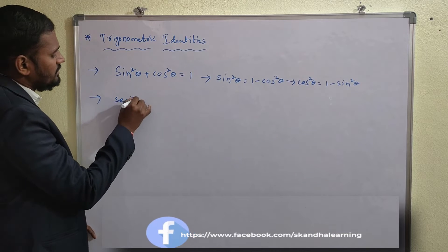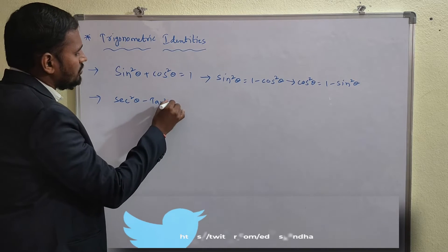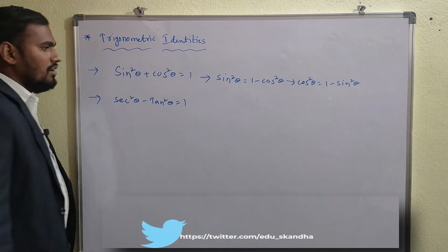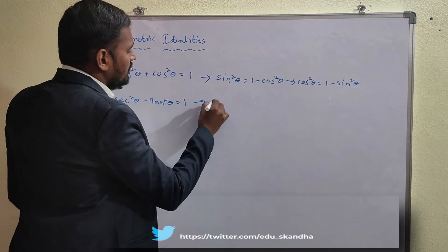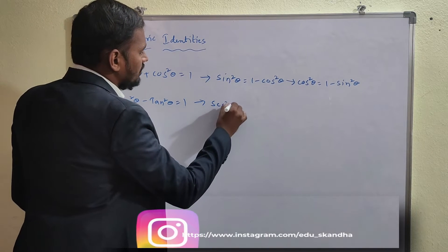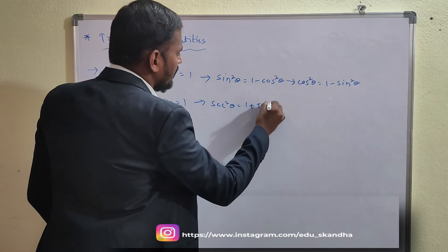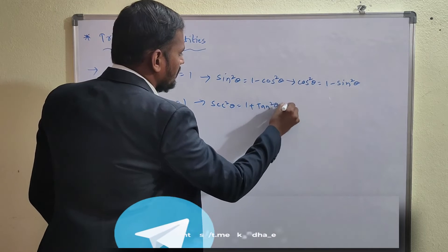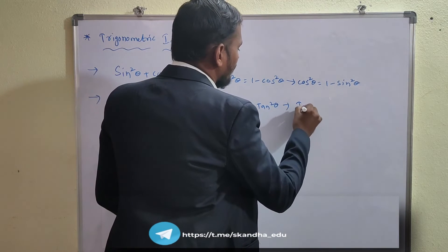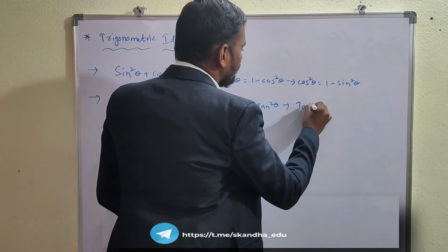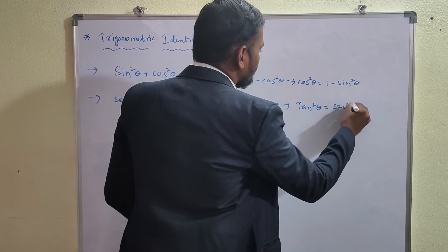The second identity is: sec²θ - tan²θ = 1. From this you can write sec²θ = 1 + tan²θ, and tan²θ = sec²θ - 1.